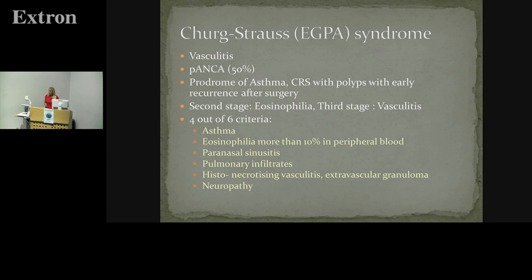Churg wasn't a Nazi, but he did support Wegener's, so we're now supposed to call this eGPA — eosinophilic granulomatous disease with polyangiitis. It's a vasculitis but with a slightly different presentation. It has a prodromal stage where they have asthma and nasal polyps, and during this stage there's very little to pick them out from other patients with nasal polyps, other than they tend to recur very early after surgery. If you have a patient with very difficult-to-manage polyps, it's certainly something to consider.